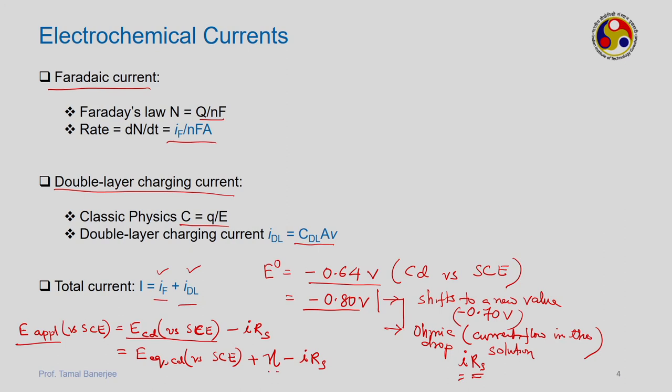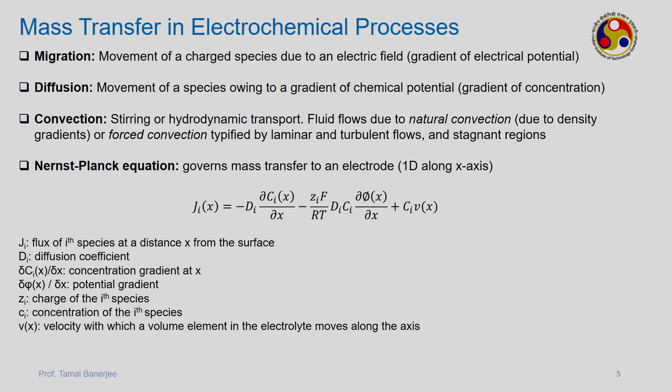The overpotential is very important — it expresses the extent to which the reference electrode is polarized. That is the expression: E applied = E_eq + η − I·Rs. We now go ahead.